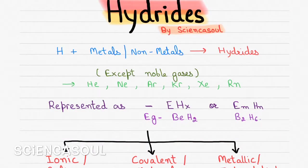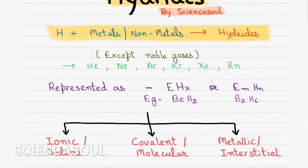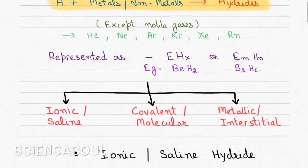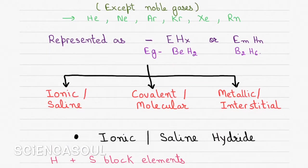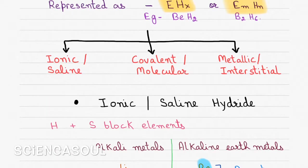Hi friends, welcome to Science Soul. Today we're going to learn about hydrides. What are hydrides? When hydrogen combines with a large number of other elements including metals and non-metals, except noble gases, they form binary compounds called hydrides. In short, hydrogen plus metals or non-metals form hydride, but except noble gases like helium, neon, argon, krypton, xenon, and radon. These hydrides are represented as EHx or EnHn, for example, BeH2 or B2H6.